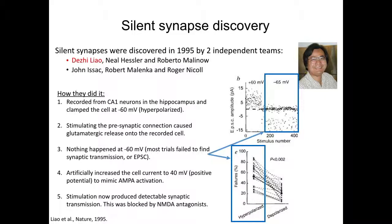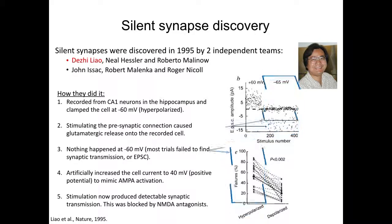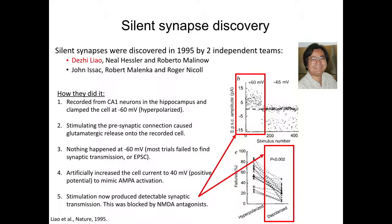They then artificially increased the cell current to 40 millivolts, which is a positive potential to mimic AMPA activation. Stimulation now produced detectable synaptic transmission, indicated by the increase in EPSC amplitude and the appearance of action potentials at the depolarized state. This was blocked by NMDA antagonists.